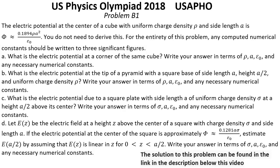Question D: Let E(z) be the electric field at height z above the center of a square with charge density σ and side length a. If the electric potential at the center of the square is approximately 0.1281 aσ/ε₀,